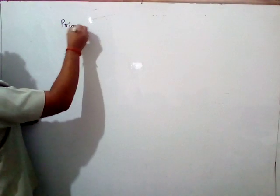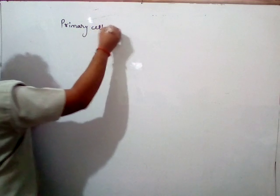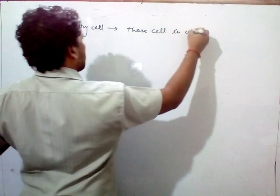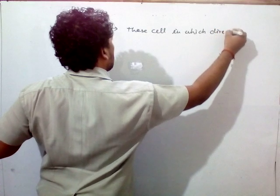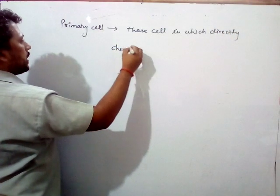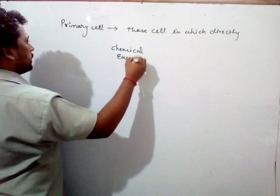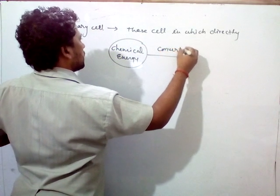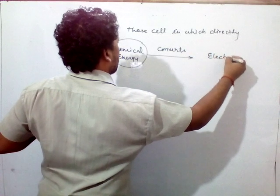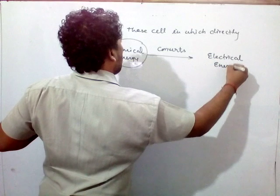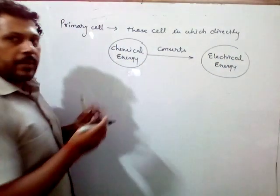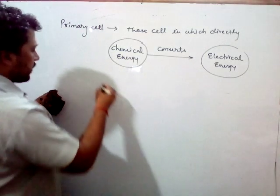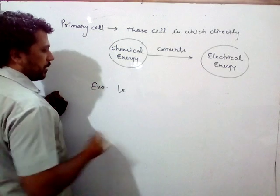Primary cells are those cells in which chemical energy is directly converted into electrical energy. Examples include the Leclanche cell and the Daniel cell.